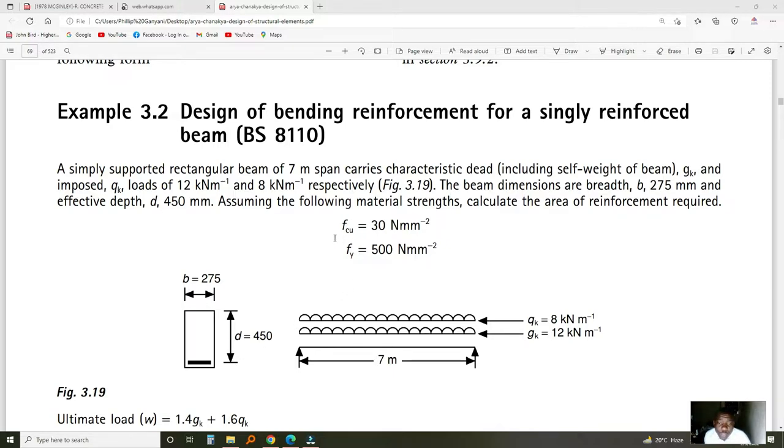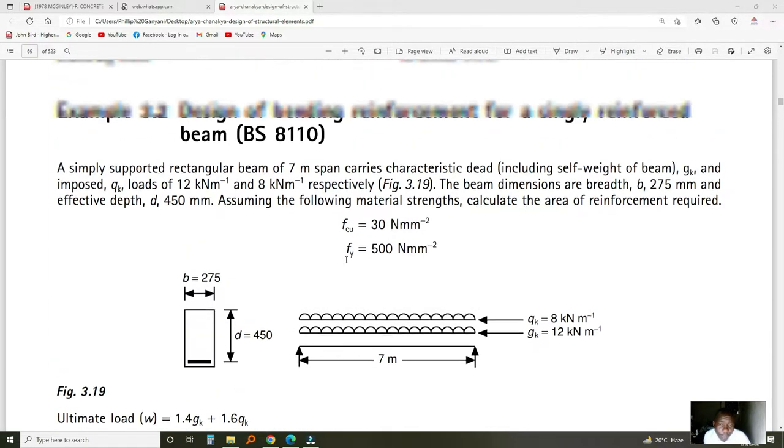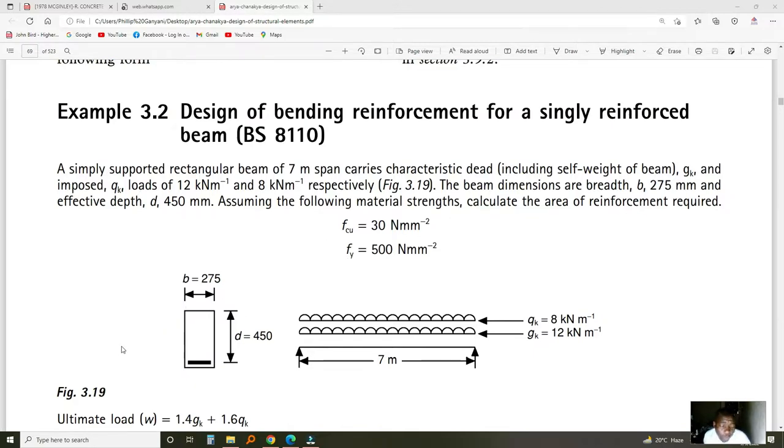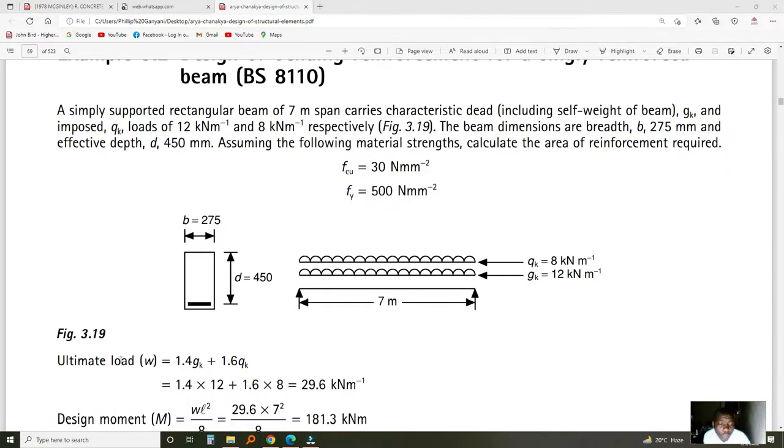When we say FCU, this is the strength of the concrete. FY is the strength of the reinforced steel. If you are doing it to BS8110, the first thing you need to do is calculate the ultimate load. Some books denote it as N, but this book denotes it as W.